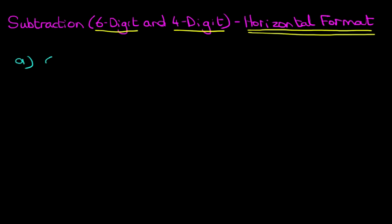What is 658,372 minus 4,567? Now in the horizontal format this looks a little bit tricky.